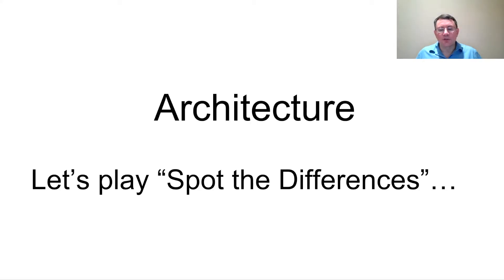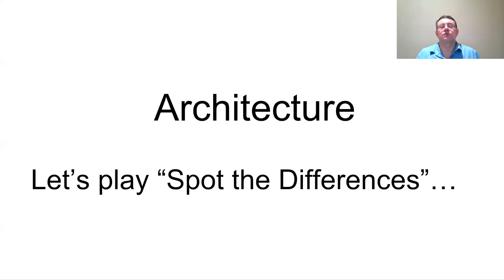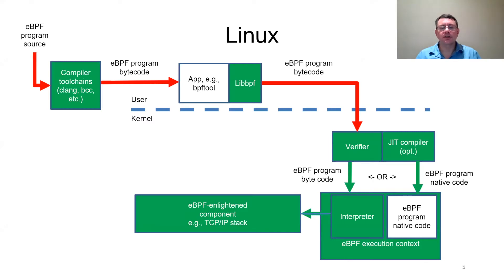We put together this project with an architecture that we tried to keep as similar as possible to the architecture familiar on Linux. Windows itself has some unique properties we'll discuss. Here's the classic Linux picture with toolchains like Clang and BCC, libraries like libbpf, and components that exist in the kernel — the verifier, JIT compiler, interpreter — plus components like the TCP/IP stack that expose eBPF hooks and helpers.